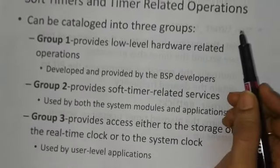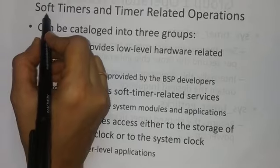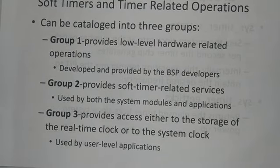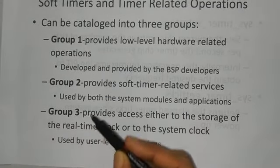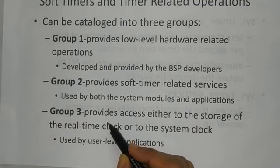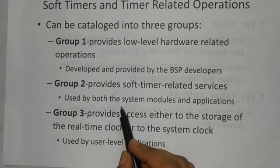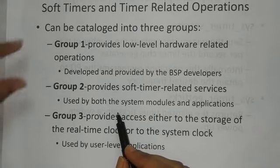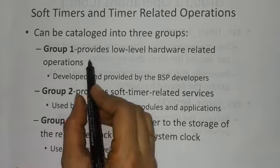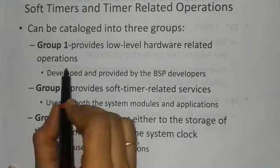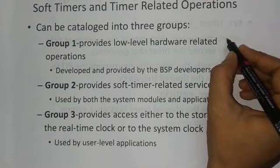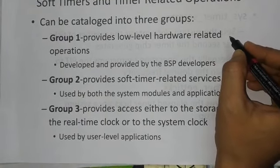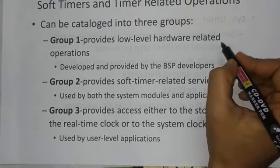The next concept is soft timers and timer-related operations. Three types of timer-related operations exist: Group 1, Group 2, and Group 3. In any operating system, we maintain some level of architecture, and here we maintain three groups of timers. Group 1 provides low-level hardware-related operations — related to the hard clock. We have two types of clocks: hard timers and soft timers. Group 1 is related to hardware.